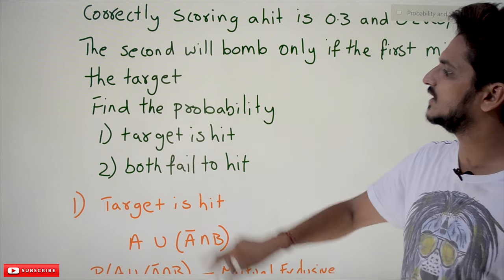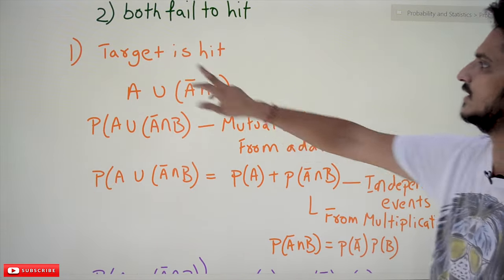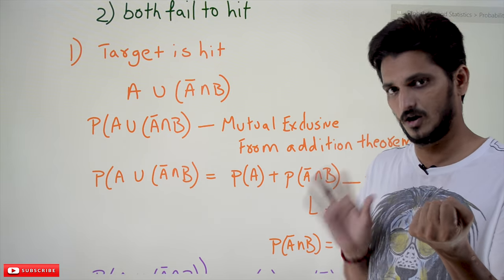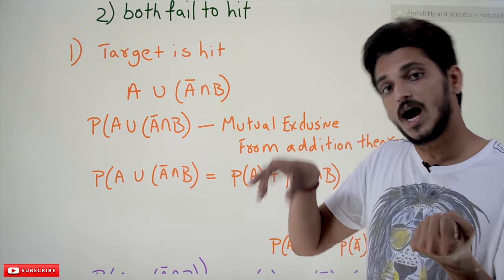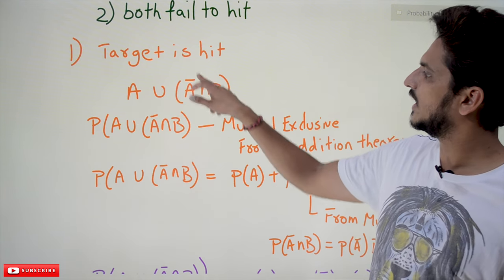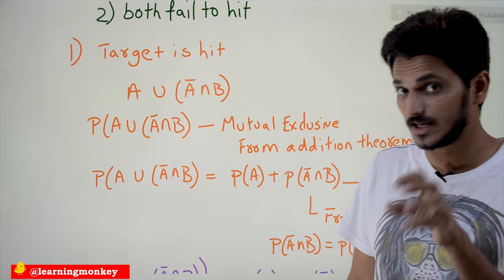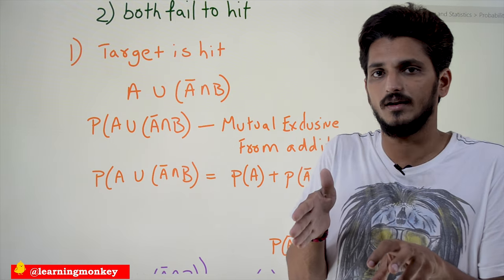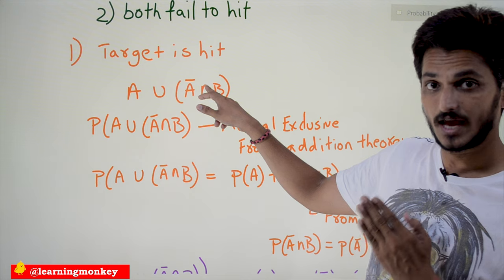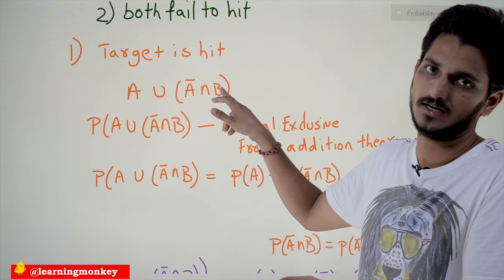They ask us to find: (1) probability the target is hit, and (2) probability both fail to hit. For the target being hit, we have two possibilities: the first airplane hits, or the first misses and the second hits. This is written as A ∪ (A' ∩ B).